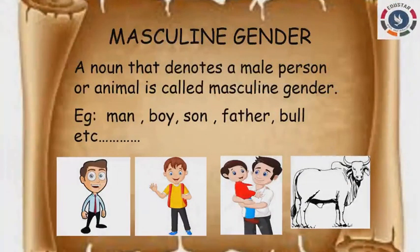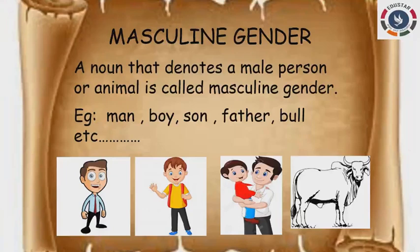Students, first we will see what is masculine gender. Masculine gender is nothing but it denotes a male person or animal. For example: boy, man, father, bull, ox — everything comes under masculine gender.